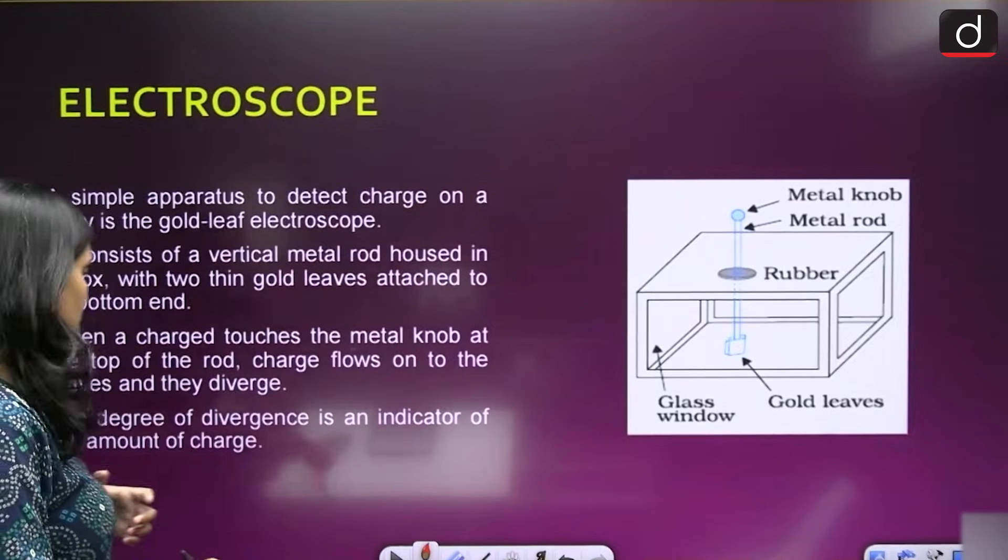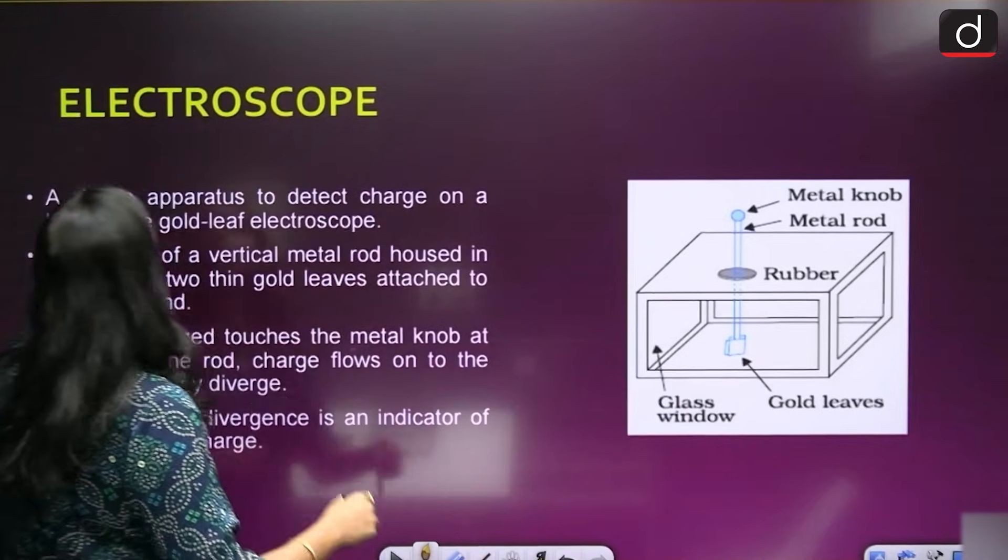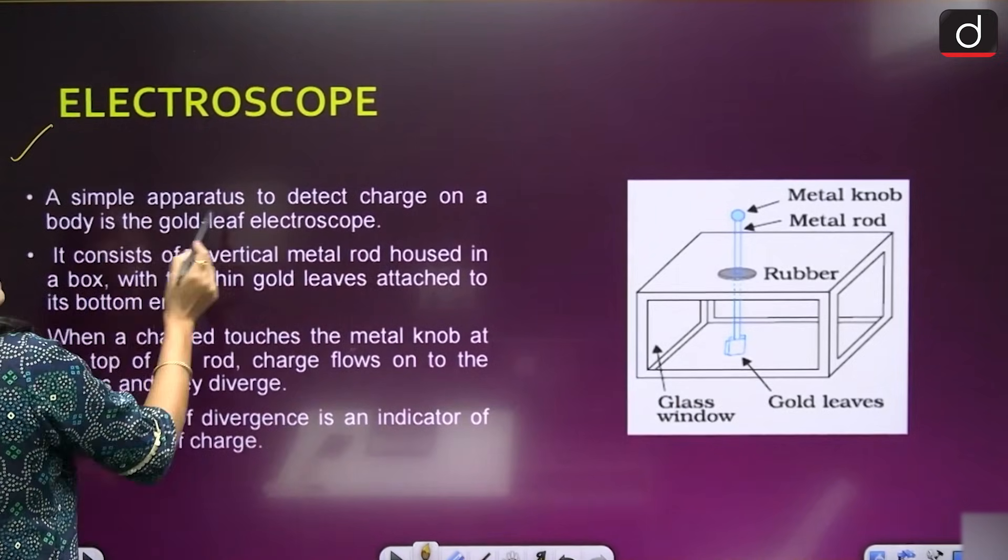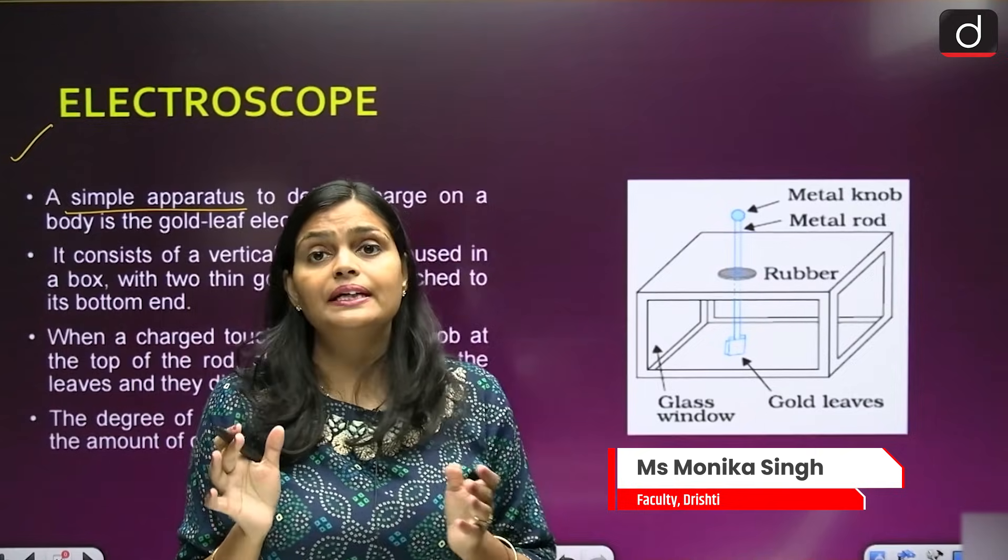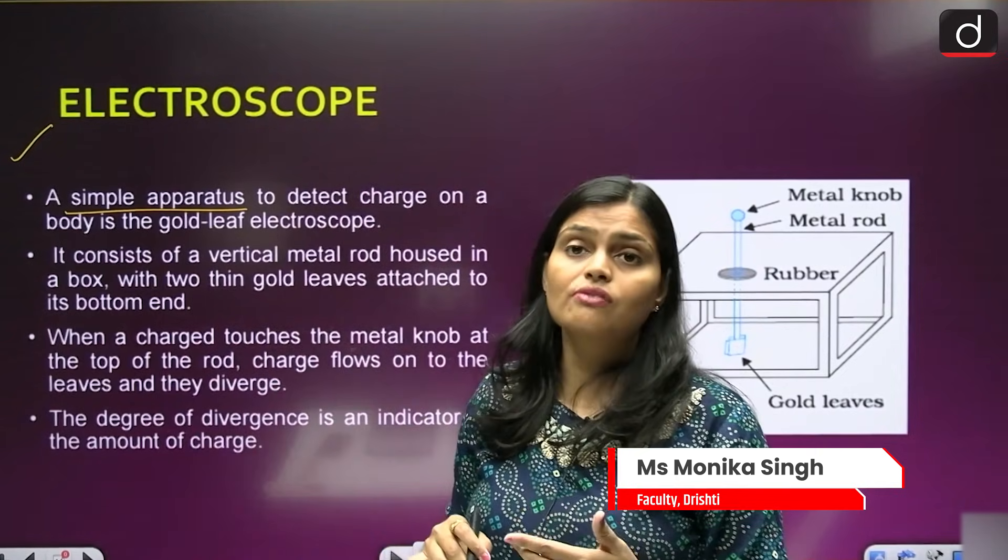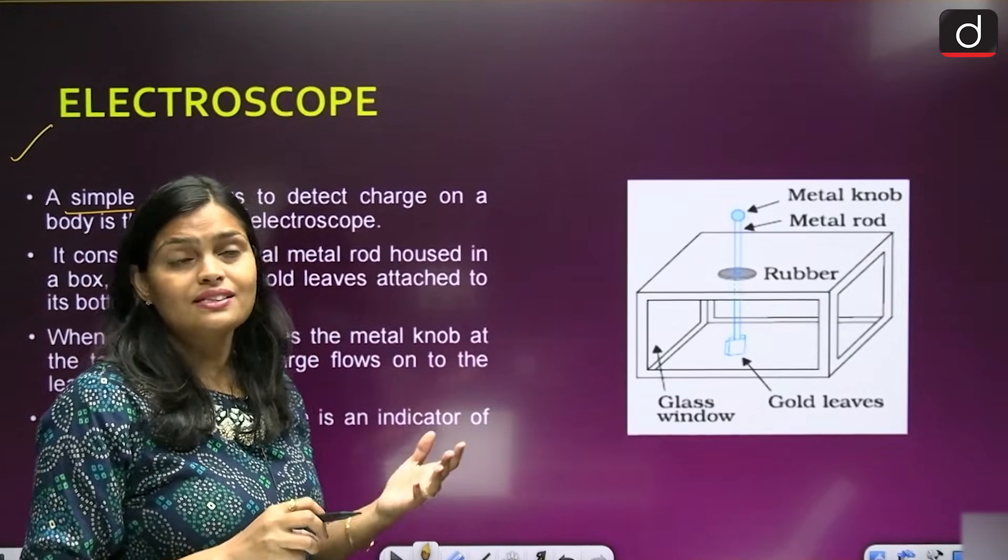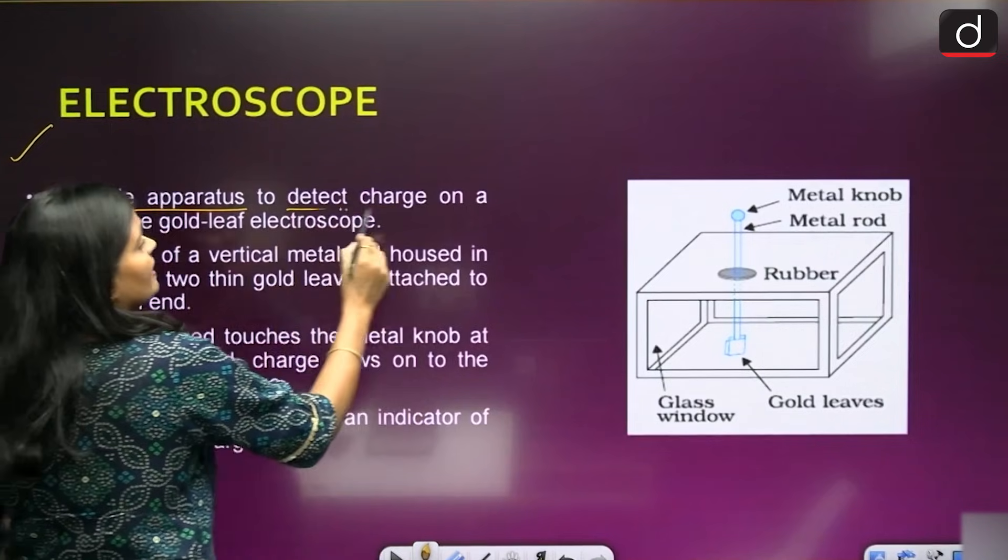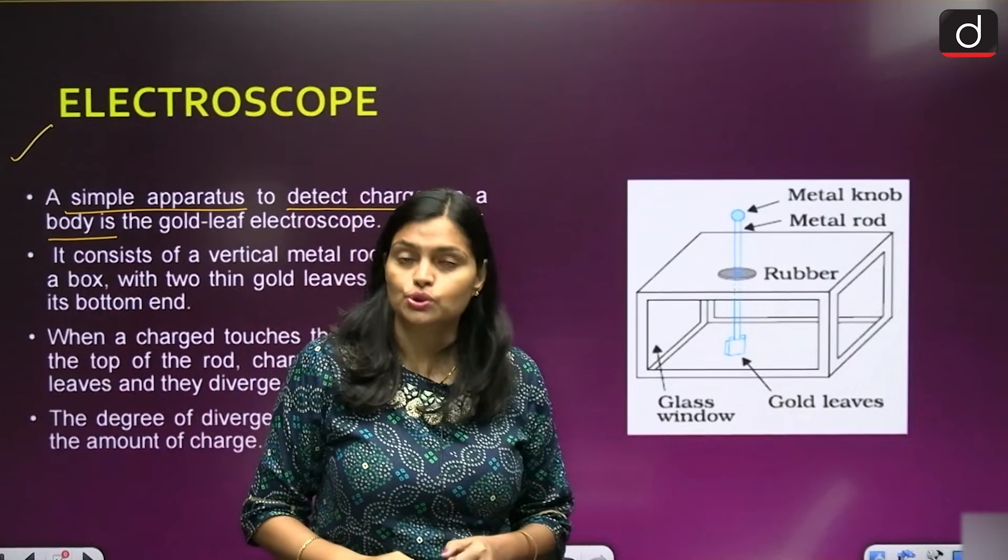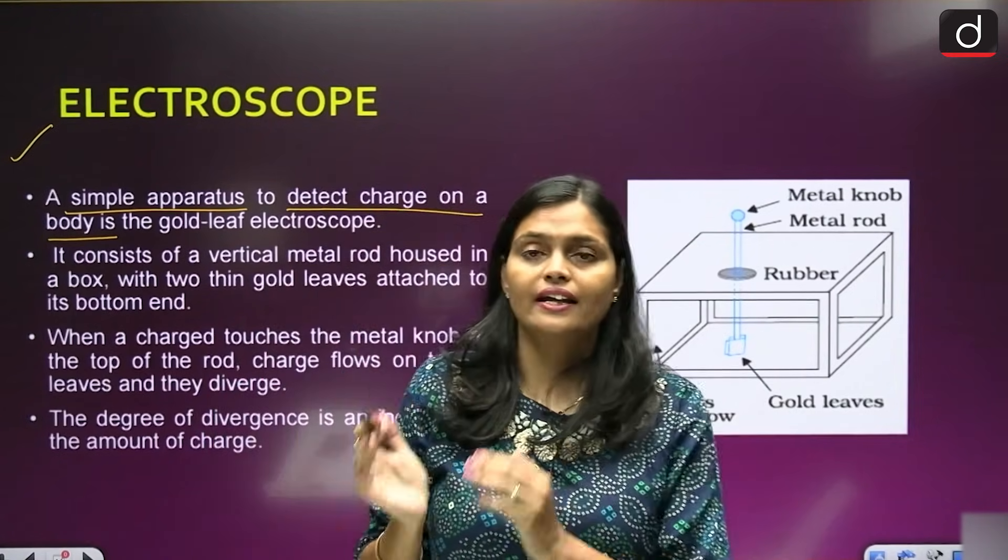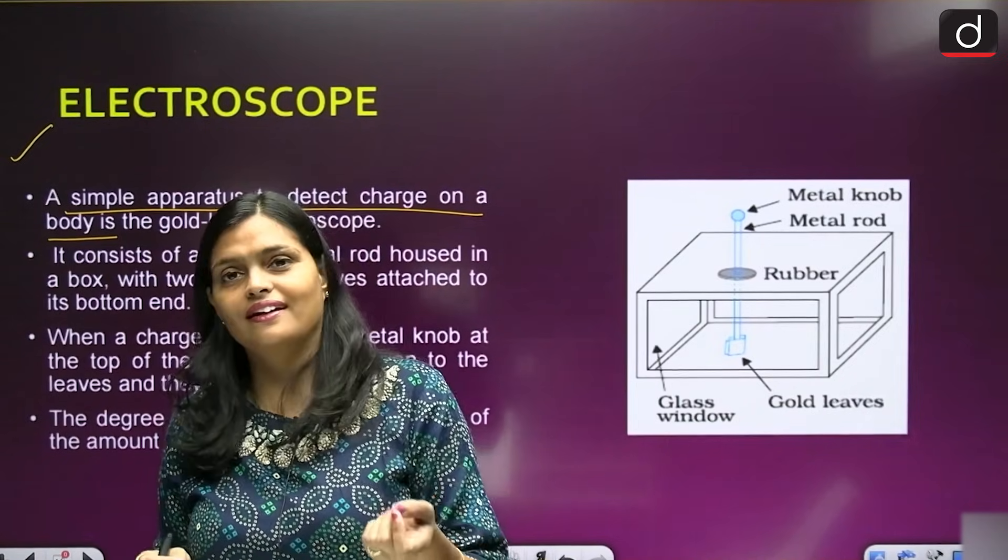Basically, electroscope is a device. It is a simple apparatus or you can say a simple device which detects the presence of charges. It detects the charge on a body in a gold leaf electroscope. Electroscope is a device used to detect electric charges.